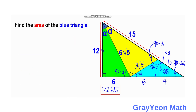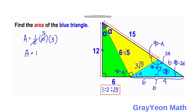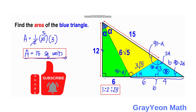For the final step, since we know the base and the height of the blue triangle: the base is 6 plus 4, which equals 10, and the height is 3. The area is one half times base times height, so one half times 10 times 3, which simplifies to 15 square units. That is our answer. Thank you for watching until the end. Please like the video if you enjoyed our solution, and don't forget to subscribe and hit the bell icon for more math videos.